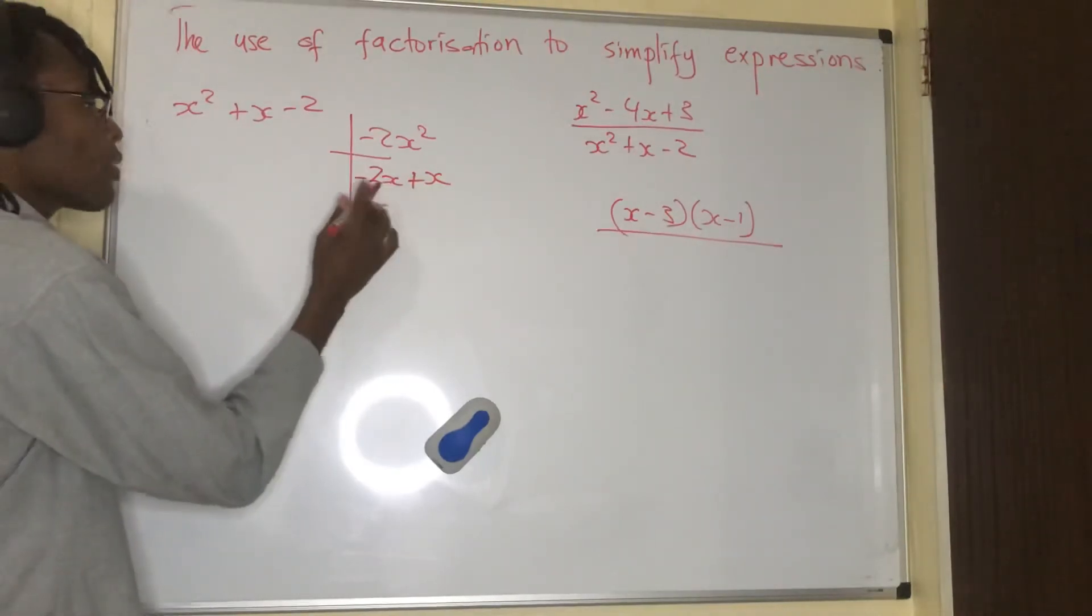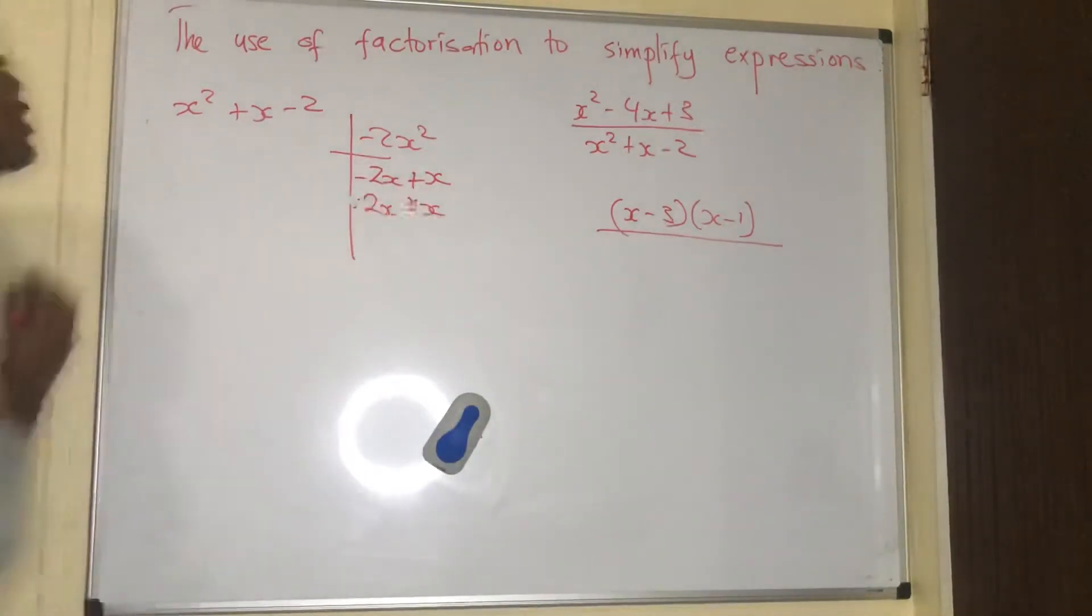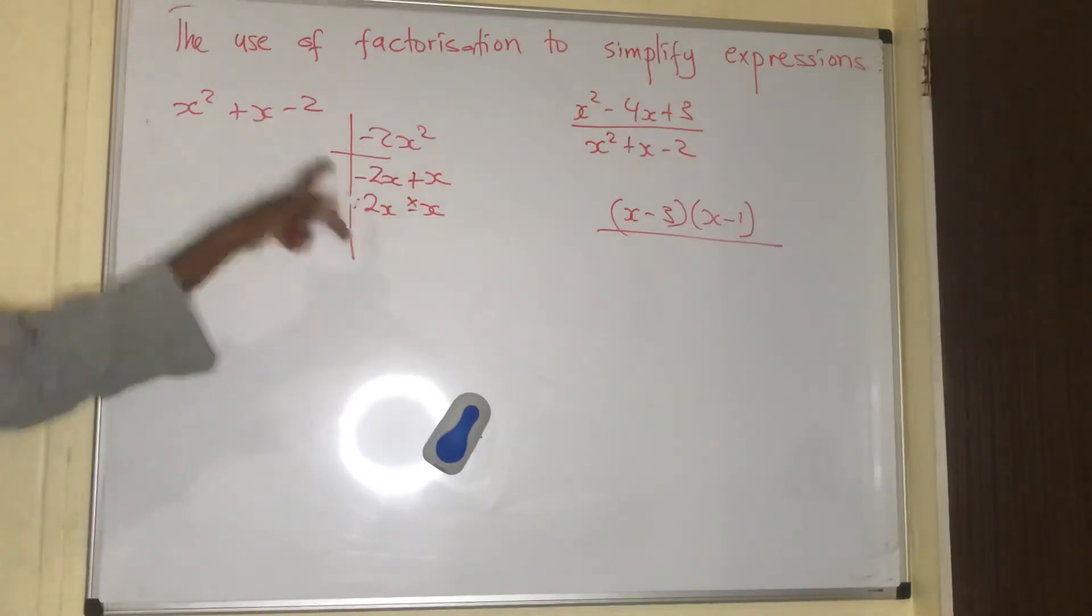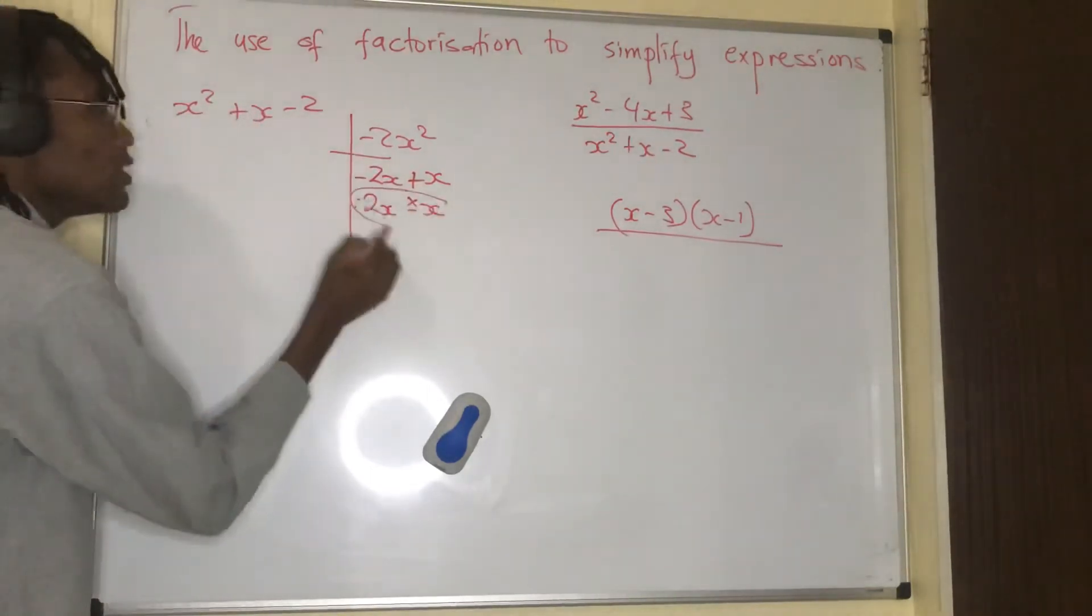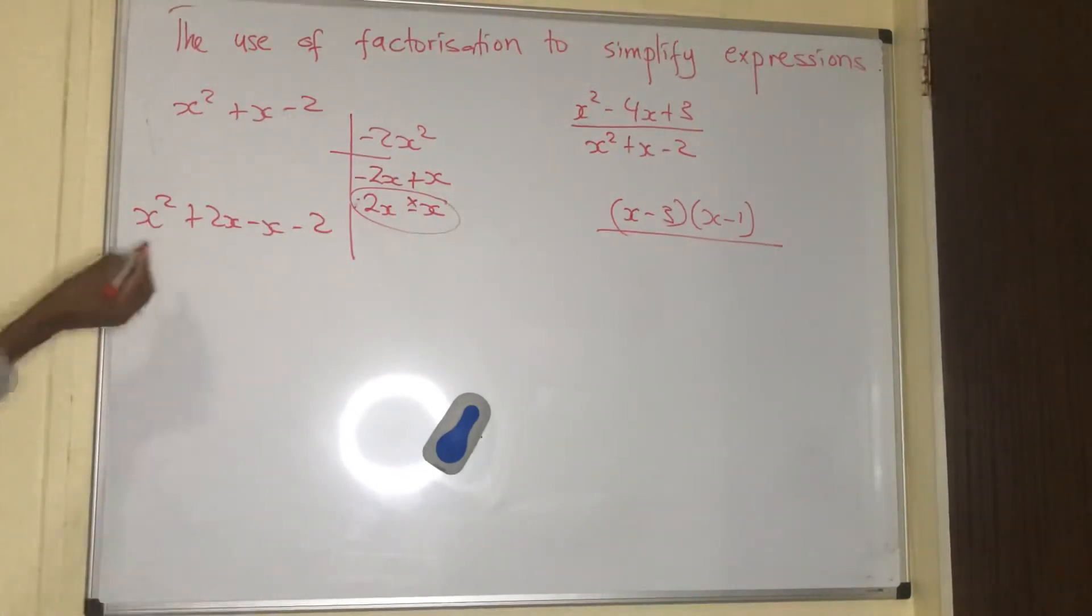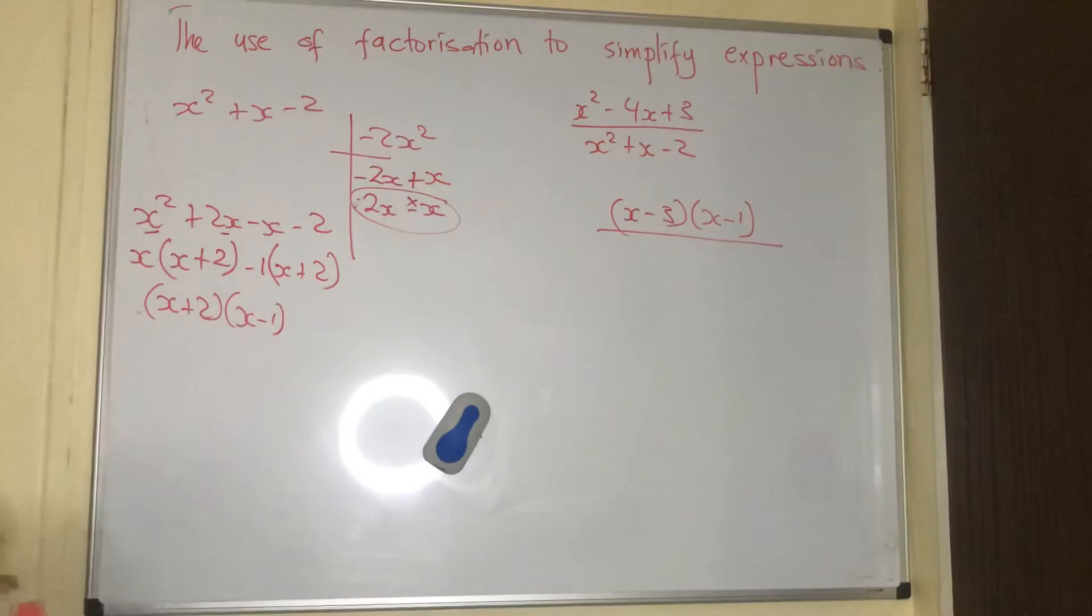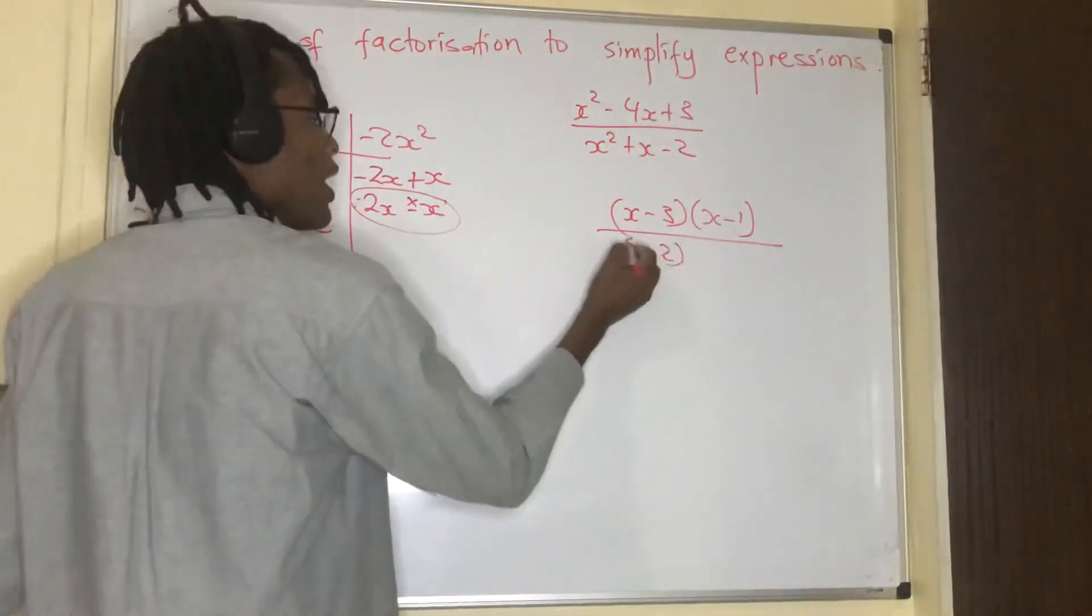Plus 2x minus x. 2x times minus x will give me minus 2x squared, and 2x minus x will give me x. This is the correct term. I'm going to have x squared plus 2x minus x minus 2. Then you can factorize. What is the common factor? x into x squared is x, x into 2x is 2. My factors are x plus 2 and x minus 1. I come here and I write x plus 2 and x minus 1.